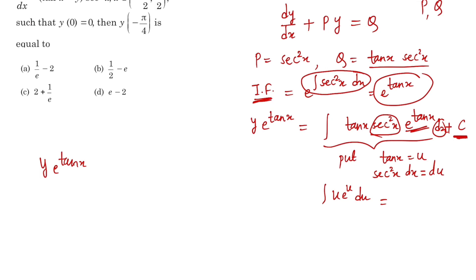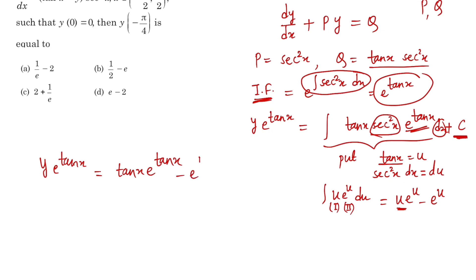Treating this as a product, apply integration by parts, calling u as the first function and e^u as the second. This gives u·e^u - e^u. Resubstituting u = tan(x), this becomes tan(x)·e^(tan x) - e^(tan x) plus the constant c.